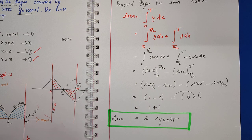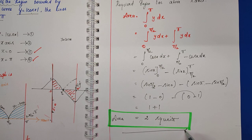Example 9.53 is complete. The required area is 2 square units. Thank you.